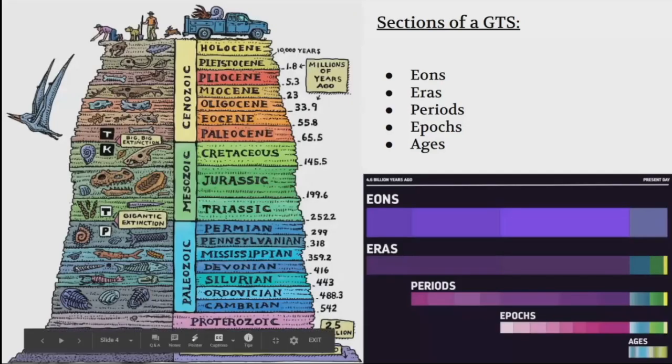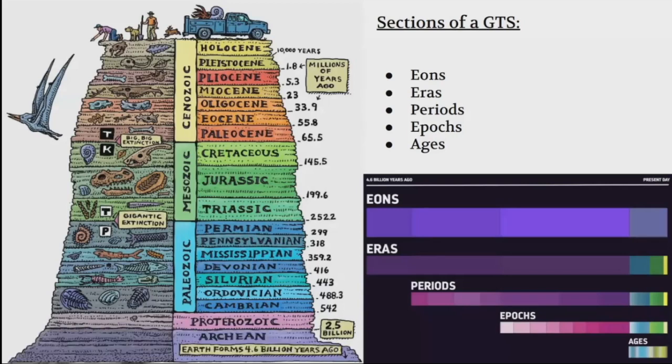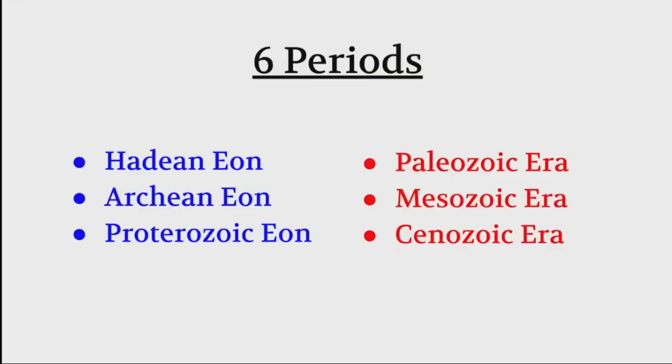On the left is an image of many periods within the Earth's geological time scale. The sections of a GTS include the eons, eras, periods, epochs, and ages. You can see on this timeline the eons are really big, then the eras are smaller, periods divide the eras, epochs divide the periods, and ages within the epochs.